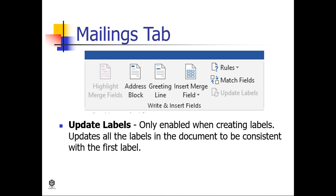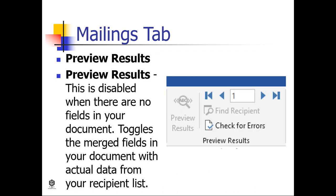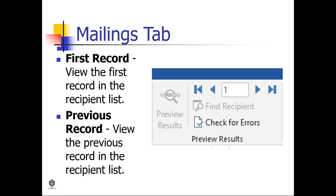Update Labels, enabled when creating labels, updates all the labels in the document to be consistent with the first label. Preview Results is disabled when there are no fields in your document; it toggles the merge fields in your document with actual data from your recipient list.